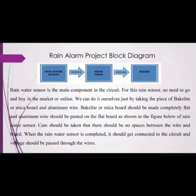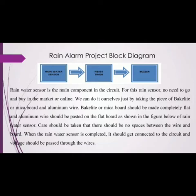Now we will see the rain alarm project block diagram. The rain water sensor is the main component in the circuit. For this rain sensor, there is no need to buy it in the market or online — we can make it ourselves by taking a piece of backlight or mica board and aluminium wire. The backlight or mica board should be completely flat and the aluminium wire should be pasted on the flat board. Care should be taken that there is no space between the wire and the board. When the rain water sensor is completed, it should be connected to the circuit and voltage should be passed through the wires.